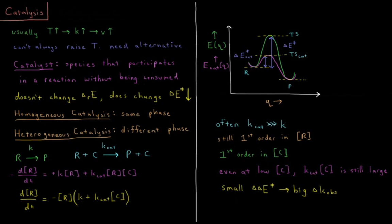But note that it is also first order in our catalyst whenever k_cat is much greater than k. So often since k_cat is so much higher than k, the result is that even at low concentrations of our catalyst, k_cat times [C] is still very large, and thus our rate of change of our reactant's concentration is still much greater whenever that catalytic mechanism is there.